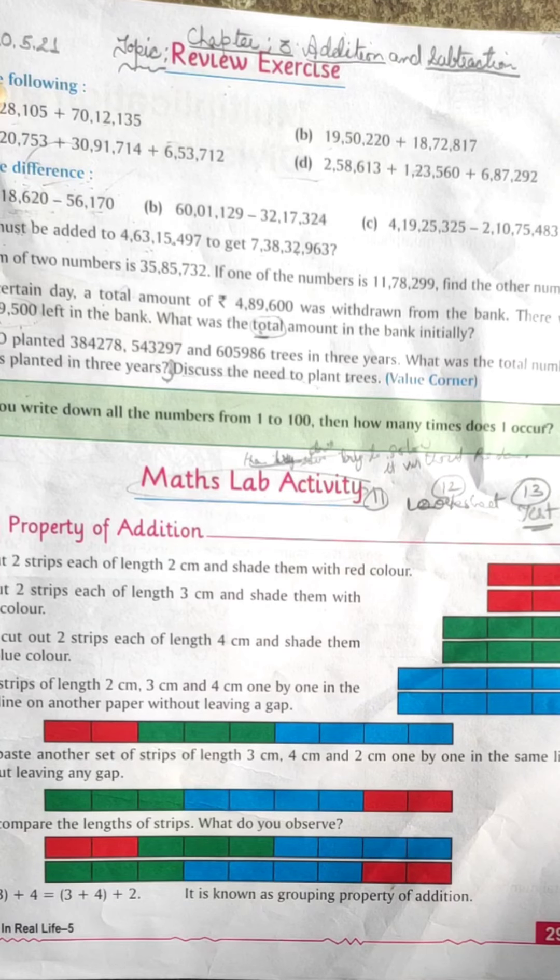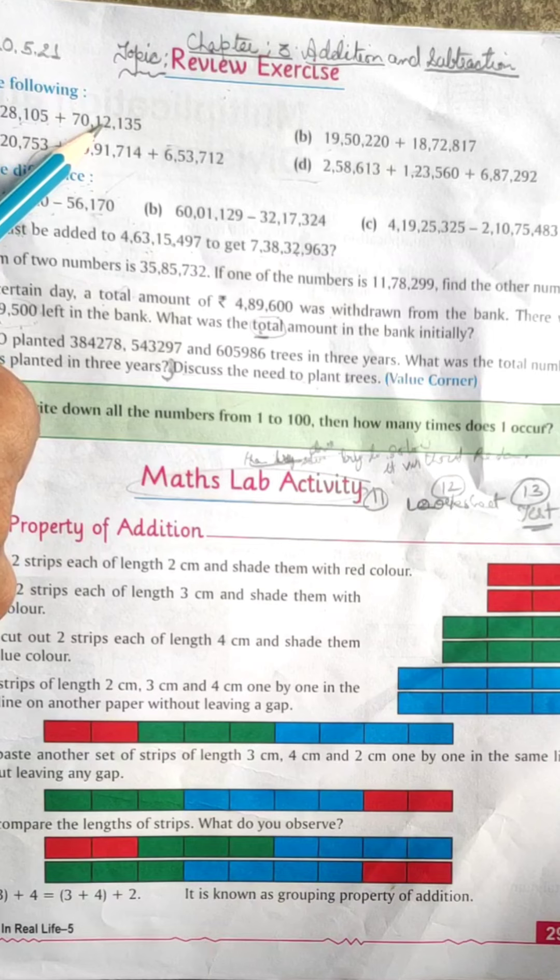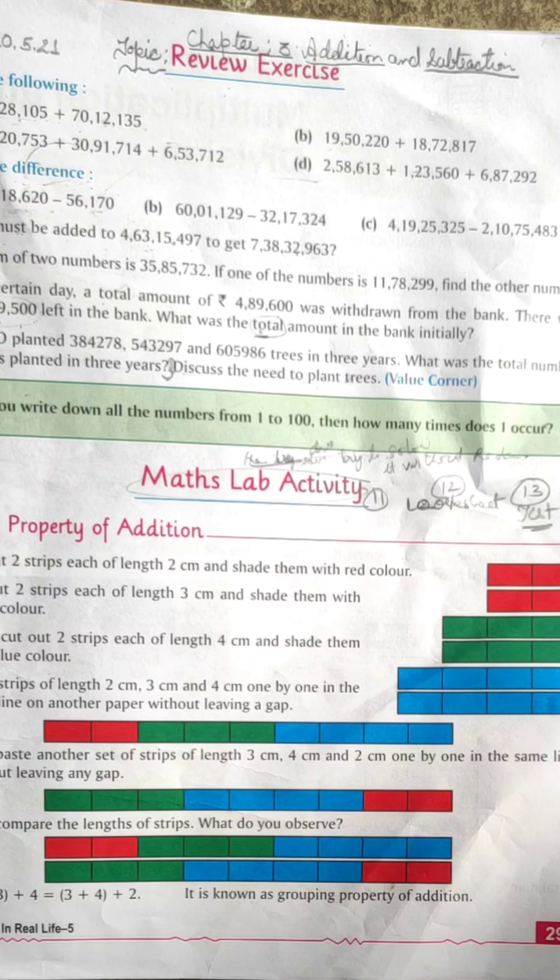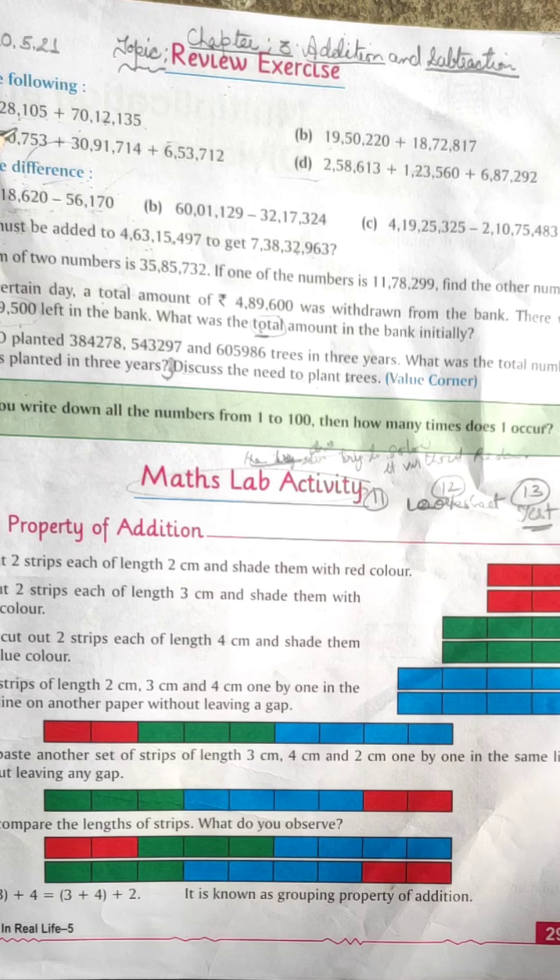Question number 1. Add the following. Number A: 35,28,105 plus 70,12,135. How can we solve this? First we arrange the numbers in vertical columns and then we add it.